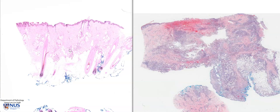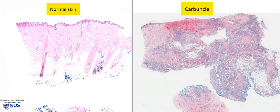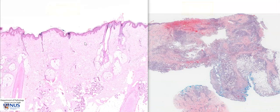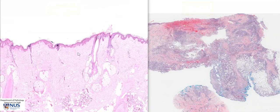Hello, we are looking at two virtual microscopy slides side by side. On the left, we have normal hair-bearing skin, and on the right, we have a carbuncle. First, I'm going to demonstrate some of the features of normal skin, and let's take a look at the layers.